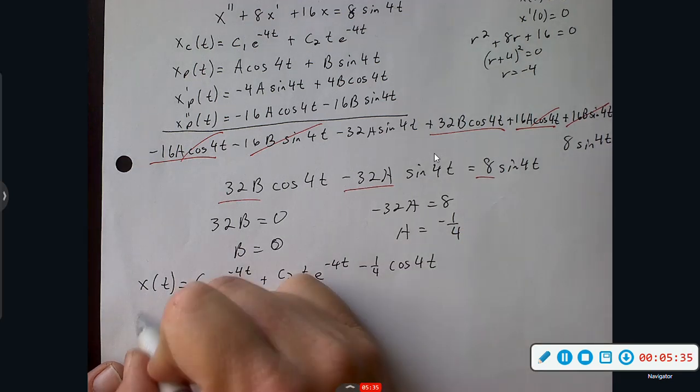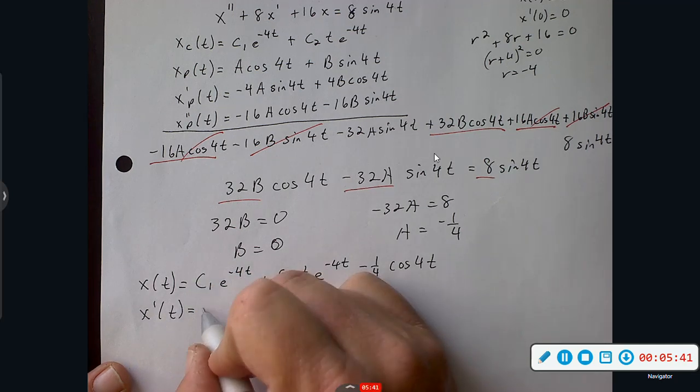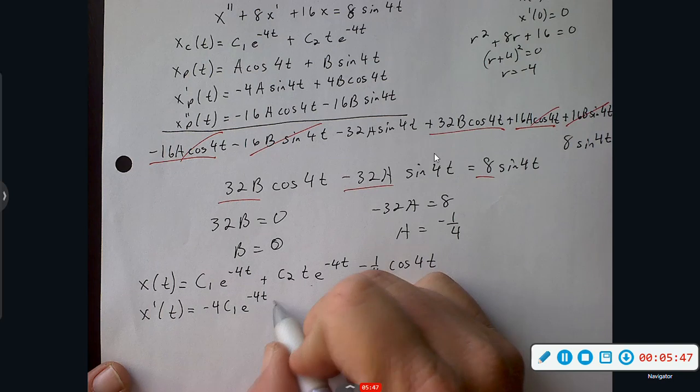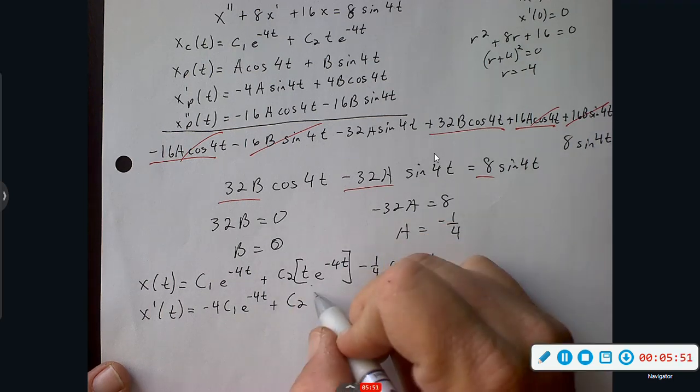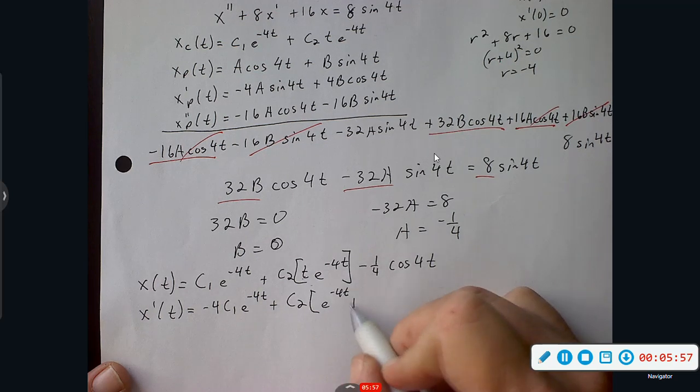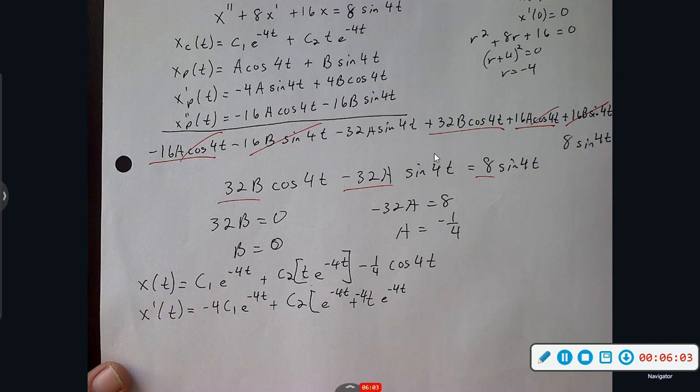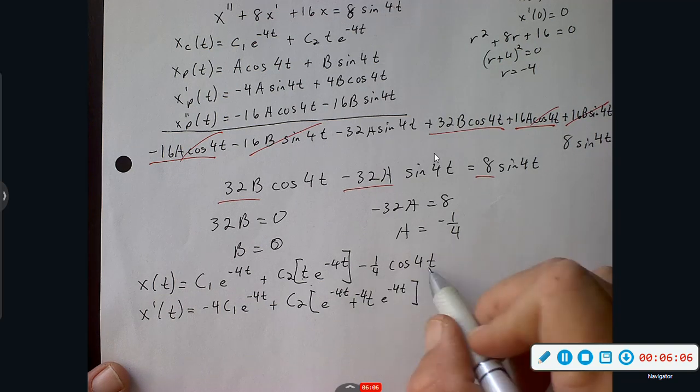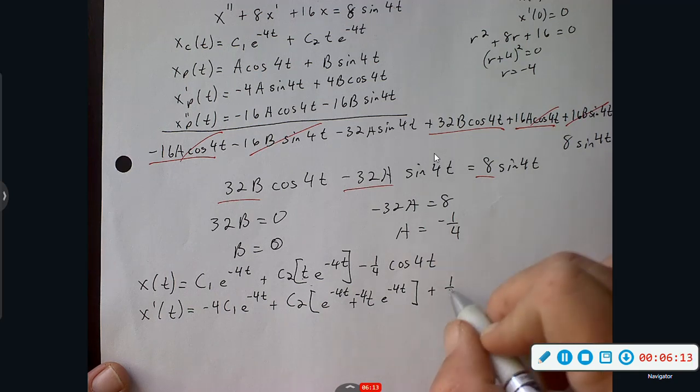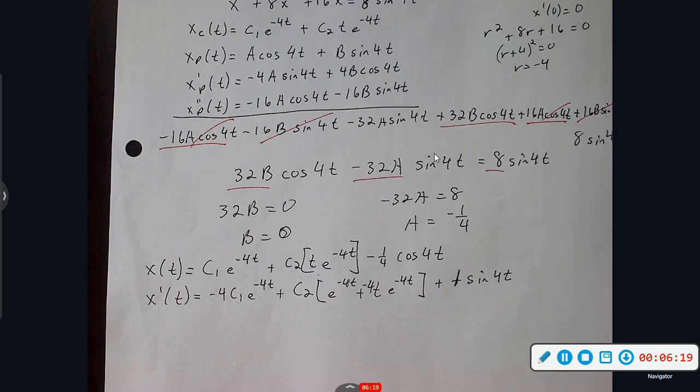What do we want to do with that? We want to take the derivative. So let's take the derivative. Negative four is going to drop out in front. Here, product rule. I've been liking doing it like this. So C2, derivative of T is just one, e to the negative 4T, and then plus T, and then derivative of that is negative four, and then e to the negative 4T. And then cosine turns to sine, negative sine, so we get positive one fourth times four, which is just one, sine 4T.